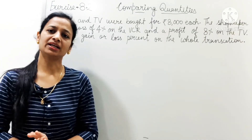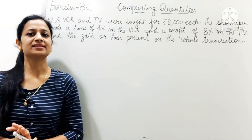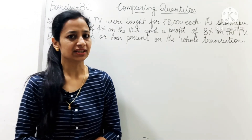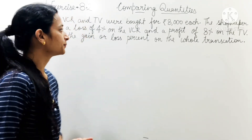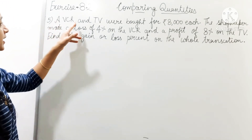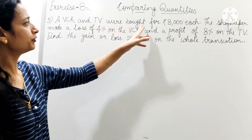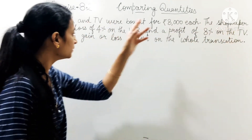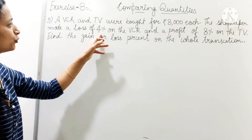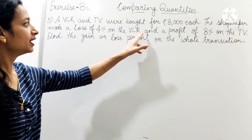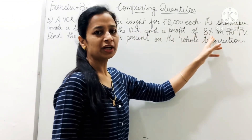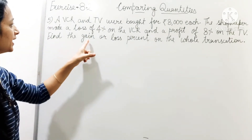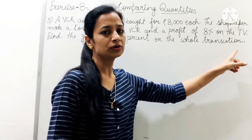Hello everyone, my name is Desi and in this video I am going to explain exercise 8.2, chapter Comparing Quantities, class 8. Question 5: A VCR and TV were bought for Rs. 8,000 each. The shopkeeper made a loss of 4% on the VCR and a profit of 8% on the TV. Find the gain or loss percent on the whole transaction.